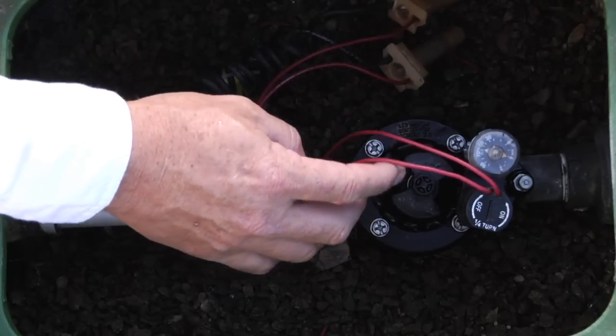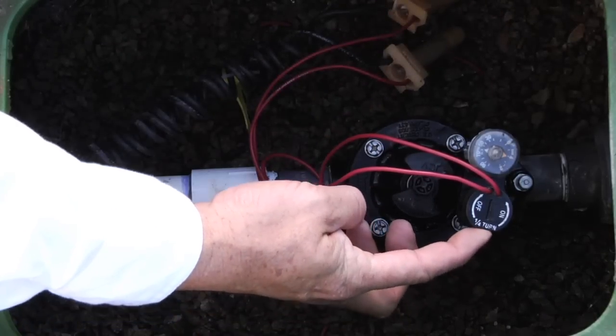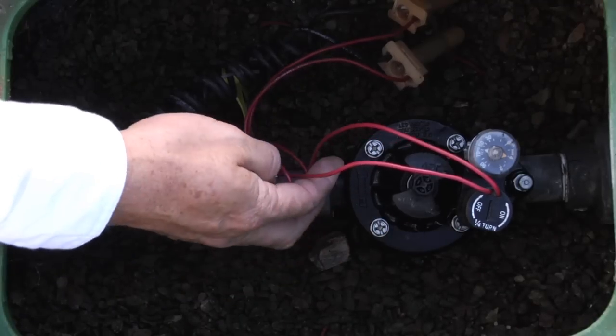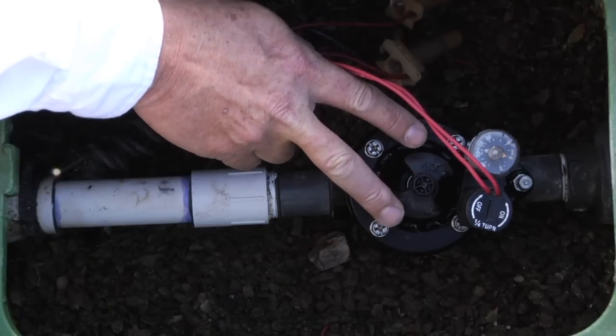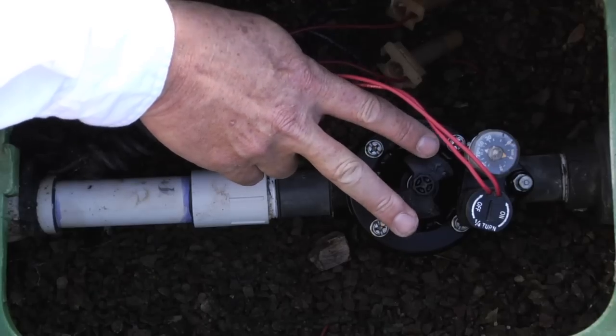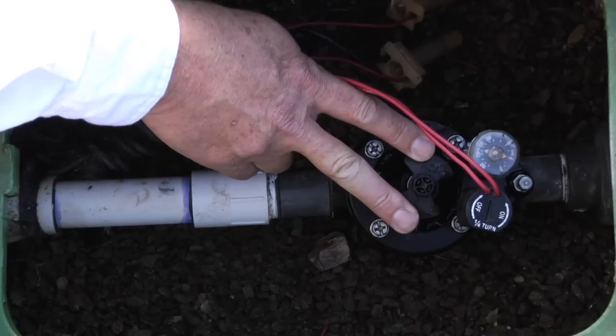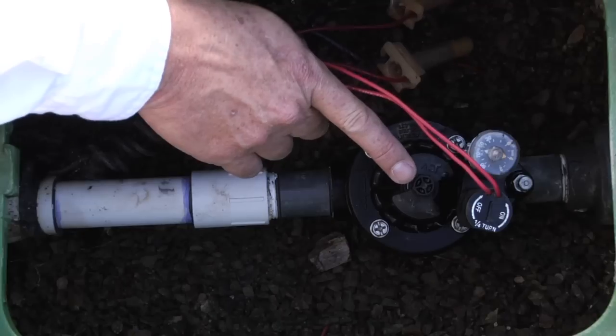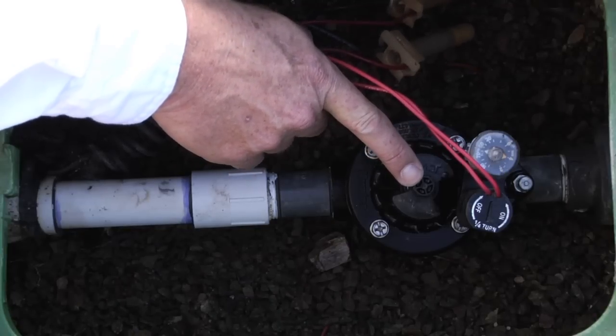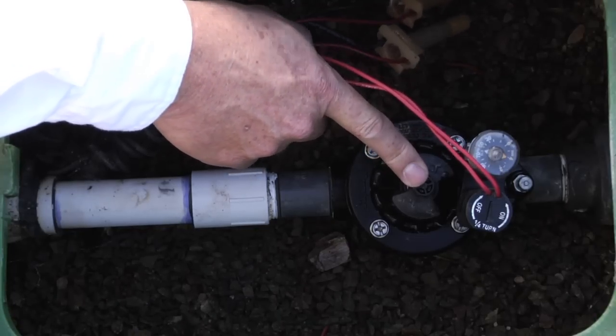The wiring leads over here to the solenoid, which is what electrically actuates the valve. In the middle we have the flow control handle, which regulates the amount of water that passes through the valve when the valve opens. In the center of that we have the manual bleeder screw that will manually actuate the valve.